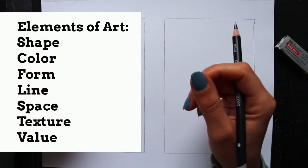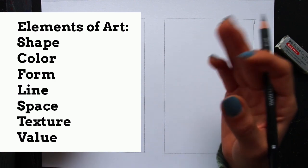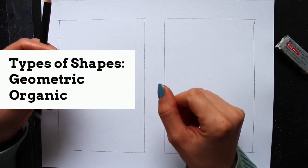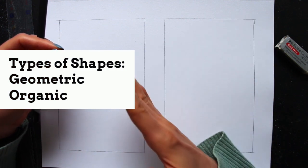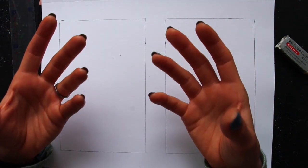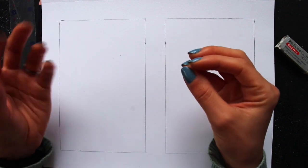Shape is an element of art along with color, form, line, space, texture, and value. There are two different kinds of shapes. There are geometric shapes and there are organic shapes.